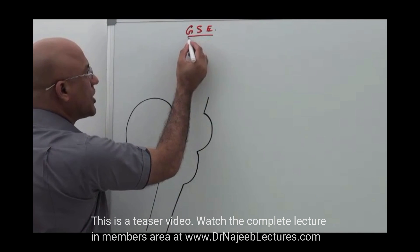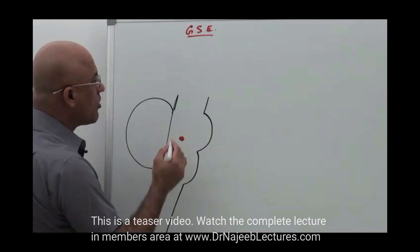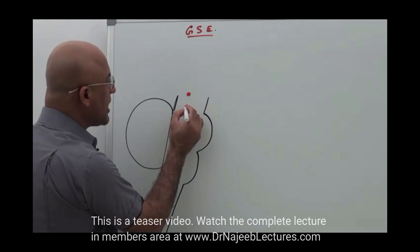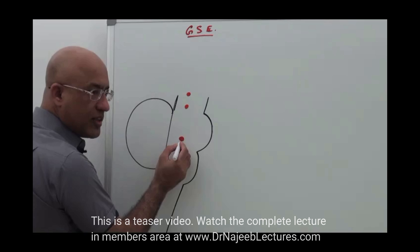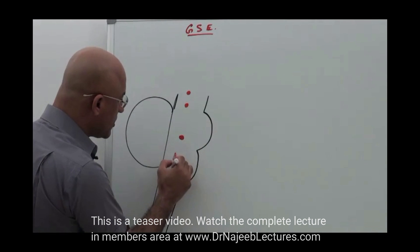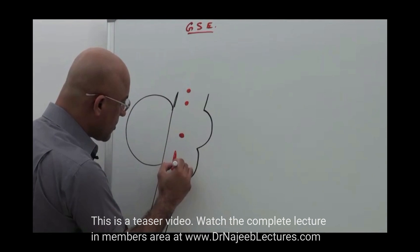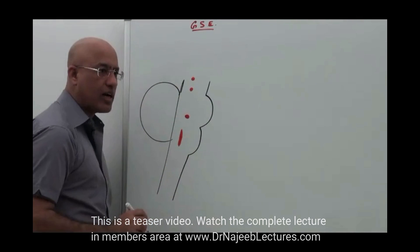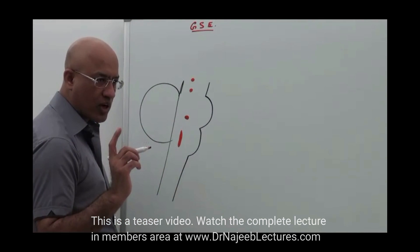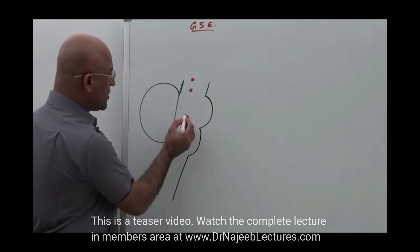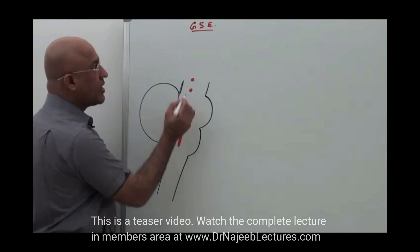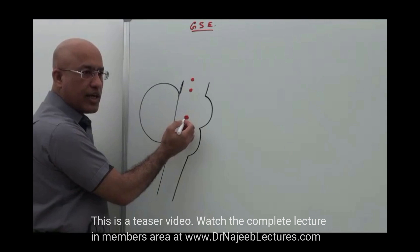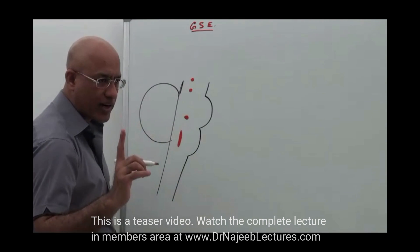GSE column is the general somatic efferent column — that is the third cranial nerve, then the fourth cranial nerve, then the sixth cranial nerve, and then the twelfth cranial nerve. So we can say the sixth cranial nerve is a purely motor nerve, a somatomotor nerve, and it carries general somatic efferent fibers.